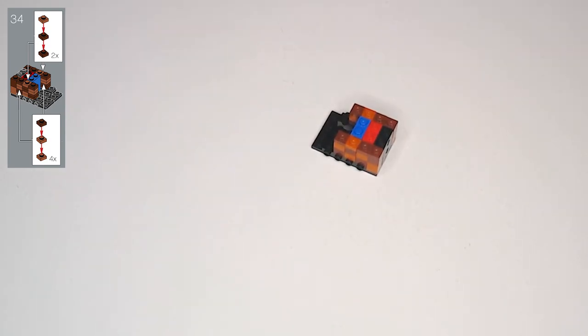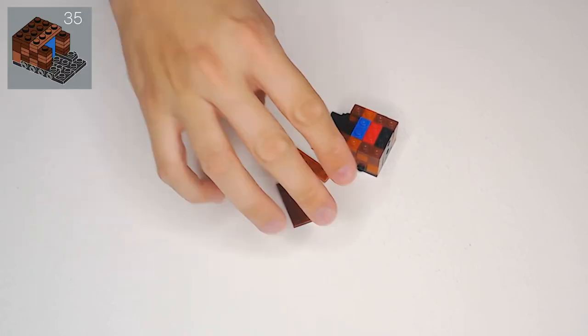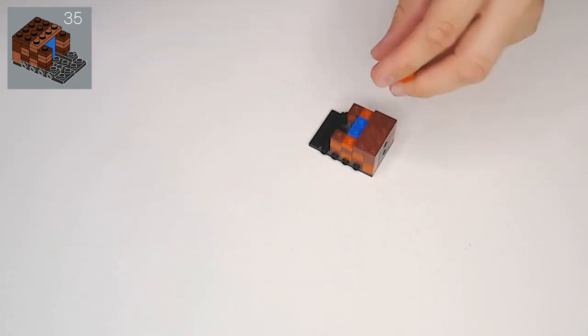We have a dark brown 2x4 plate, and a light brown 1x4 plate. The dark brown 2x4 is going to go on top of the black and red blocks, and this one is going to go on top of the blue.